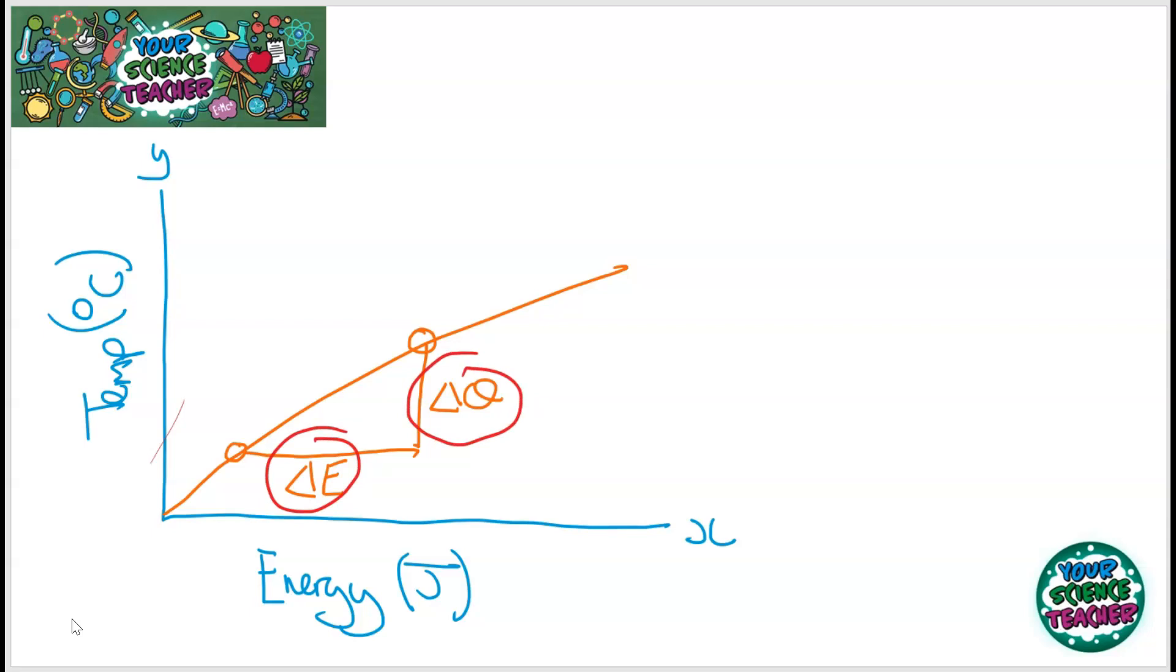Then, to work out your specific heat capacity, remember that is E divided by change in temperature times the mass of the object. Now, I said it's easier if the mass of the object is one kilogram because then it doesn't matter about the mass of the object. But you need to put in the mass of the object if it's any other value to one. So, to do that, you just do E divided by delta theta.